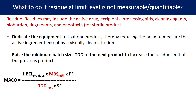The MACO will be higher when the minimum batch size of the next product is more, and when the therapeutic daily dose of the next product is low. So if I can have the maximum ratio possible for MBS-next divided by TDD-next, the MACO value is going to be on the higher side. Let us take one example to understand this concept.